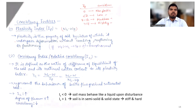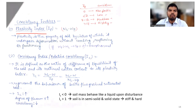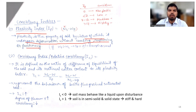Now we discuss consistency indices. Plasticity is the property of soil by virtue of which it undergoes deformation without cracking, rupturing, or fracturing. The plasticity index IP equals WL − WP, the difference between liquid limit and plastic limit. If WP is greater than WL, then IP equals zero, which is possible for sand.